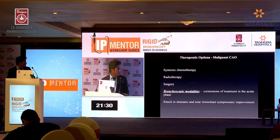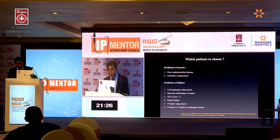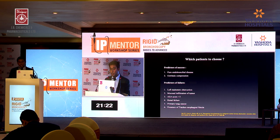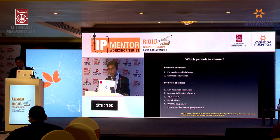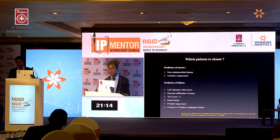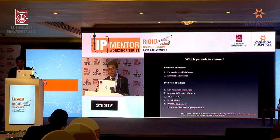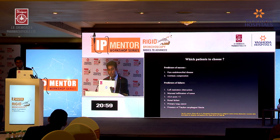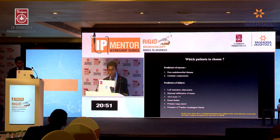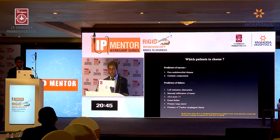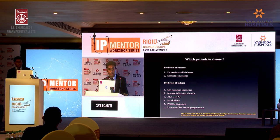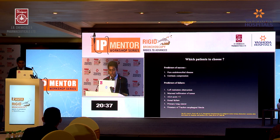Which patient do you choose? Studies have identified predictors of success and failure, but with experience I would say none of them is definitive — every patient is different. In general, a patient with pure endobronchial disease or pure extrinsic compression has better outcomes. However, left main stem bronchus obstruction, mucosal infiltration, ASA score greater than 3, comorbidities like renal failure, primary lung cancer, or presence of a tracheoesophageal fistula are all predictors of dismal results even after de-obstruction.